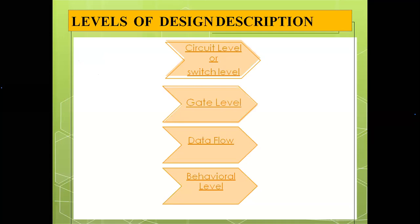Looking at levels of design description, we have different levels. Generally there are two types of hierarchies: top-down approach and bottom-up approach. Going from bottom to top, the levels are: circuit level (also called switch level), then gate level, then data flow level, and then behavioral level.